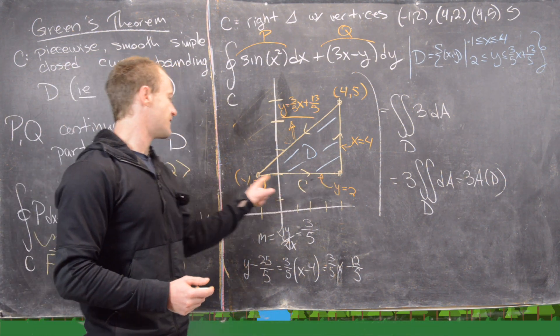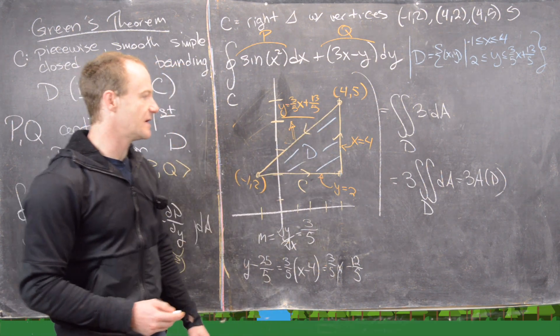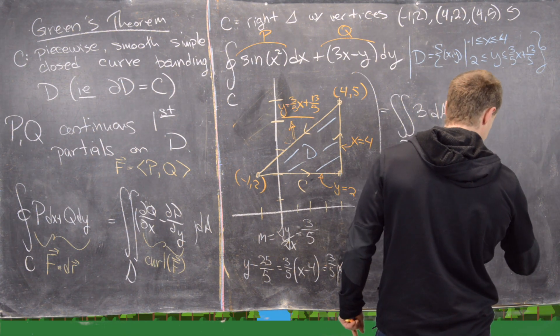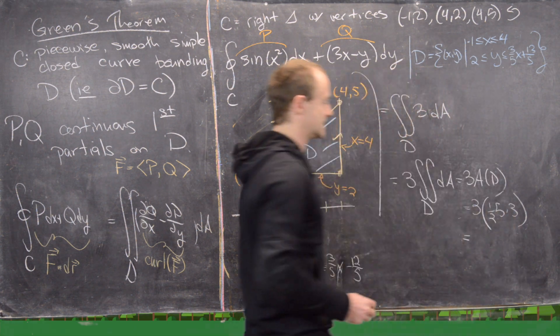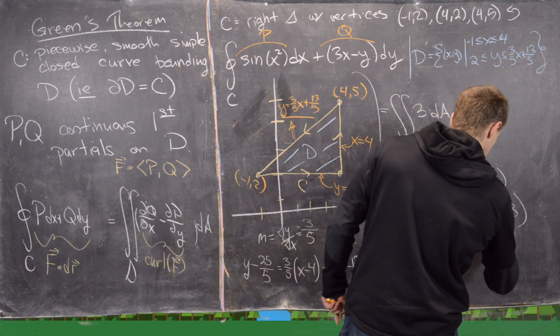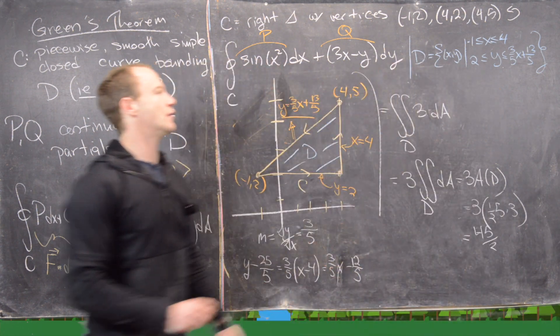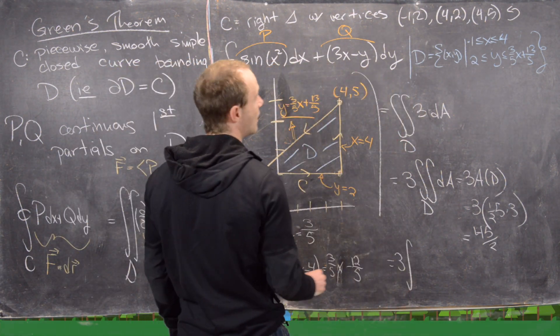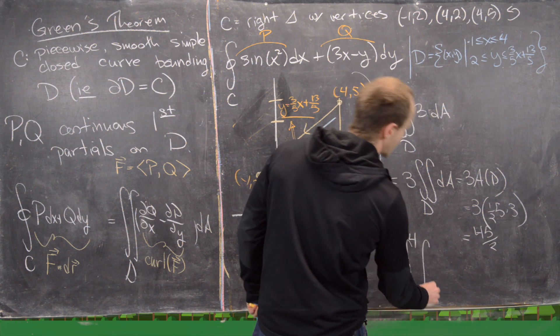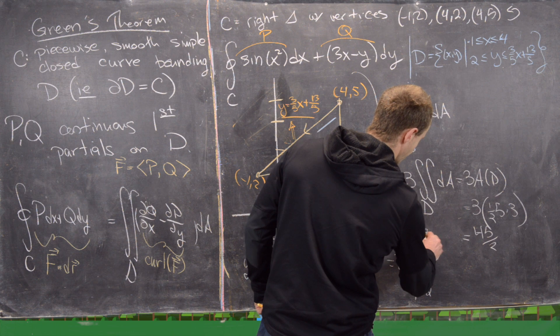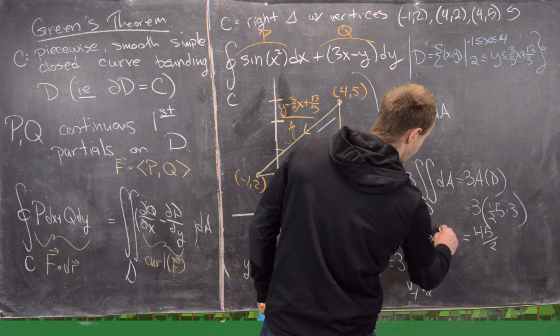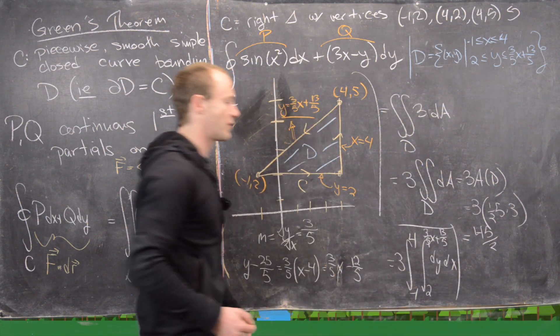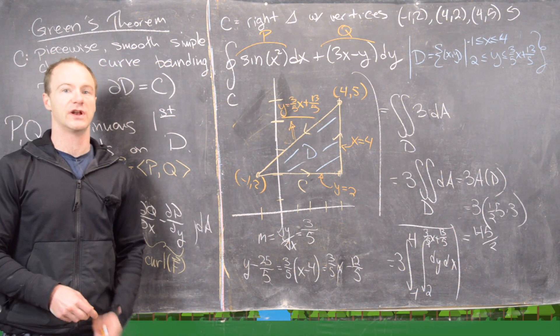The way I want to do it first is notice that this is exactly equal to 3 times the area of the region D because the double integral of just dA over D is just the area of the region. But this is a right triangle, and triangles have a well-known area formula. Notice this has base of 5 and height of 3. So this is 3 times 1/2 base times height. So 1/2 times 5 times 3, and that gives us 45/2. Which means we wrote our region D kind of for no reason. But if you would rather do this as 3 times the integral from -1 to 4 and then the integral from 2 to (3/5)x + 13/5 of dy dx, that will provide you with the same number. I'm going to clean up the board and do another example.